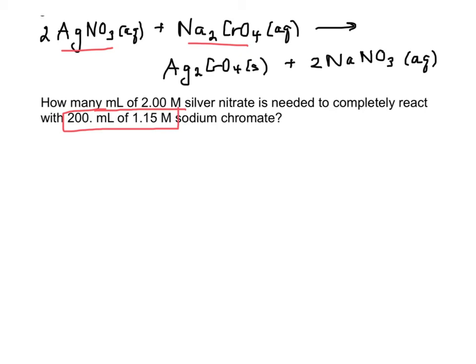Again, find if they give you both the volume and the molarity of something, because right off the bat, now we're going to go ahead and calculate moles. So 1.15 molar times 0.2 liters is going to give us 0.230 moles of sodium chromate. Oops, sorry, scribbling a little bit.